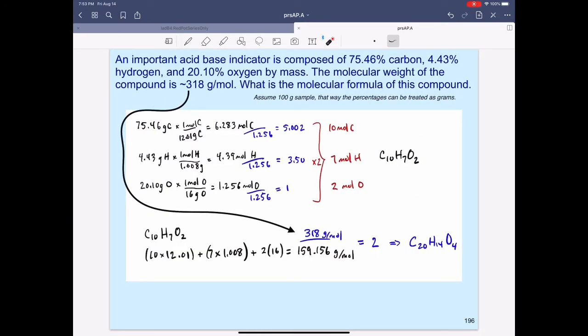So as before, we need to take the mass of each element, divide by the respective molar masses, which of course will give us moles of each of these substances, and then again divide by the smallest mole value, which in this case is oxygen, resulting in 5 moles, 3.5 moles, and 1 mole.